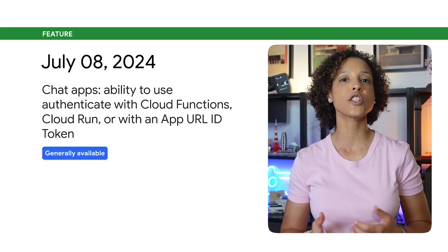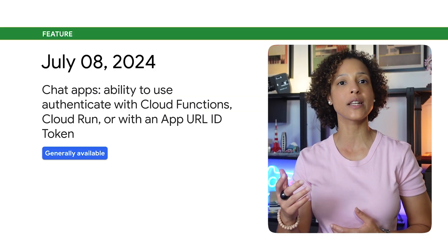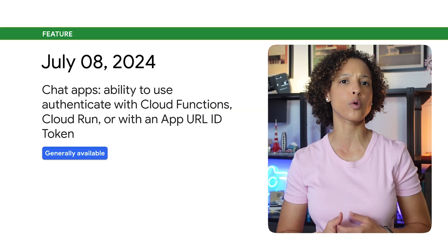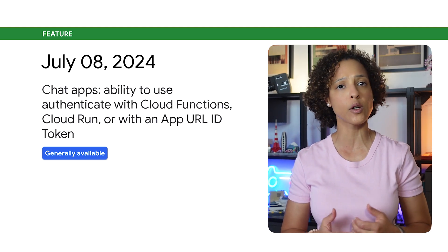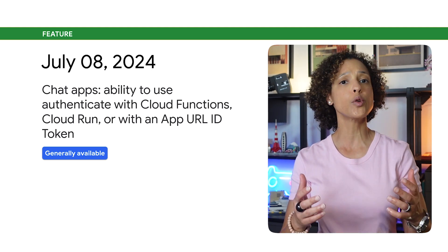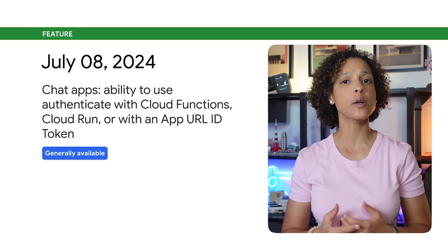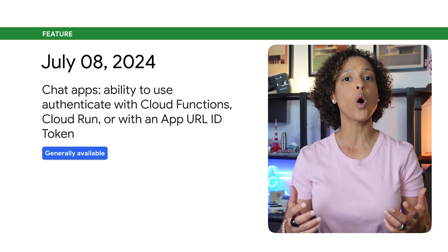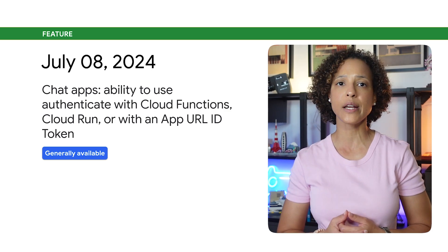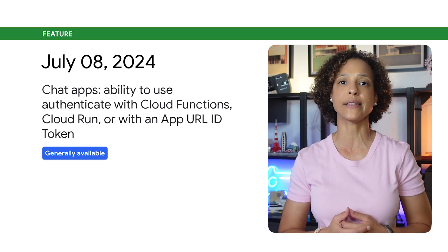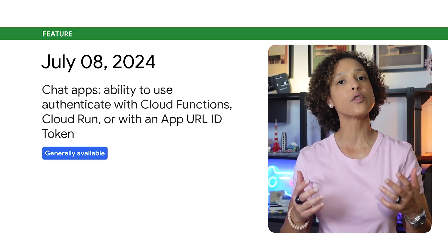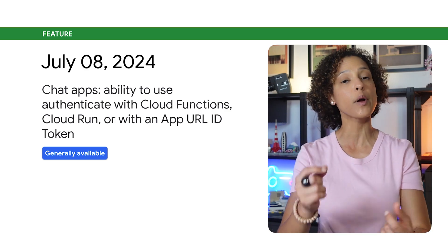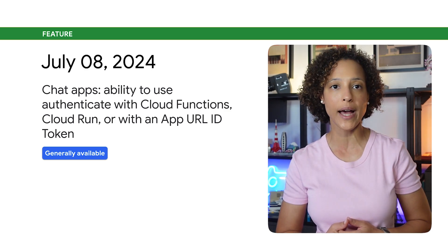When building chat apps using Google Cloud Functions, Cloud Run, or any system that supports authentication via ID tokens, you can now authenticate requests using Cloud Functions or Cloud Run, or authenticate requests with an app URL ID token to verify that the requests to your app come from Google Chat.